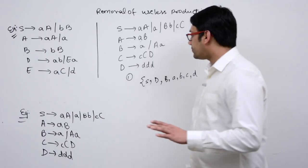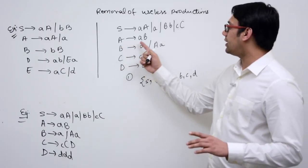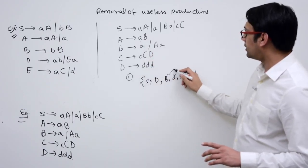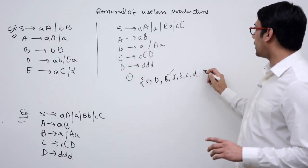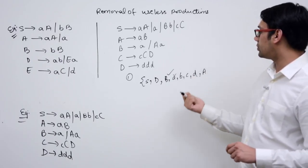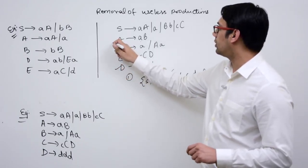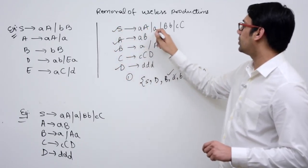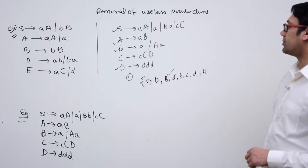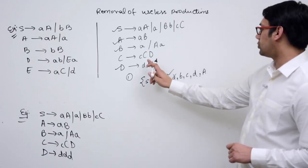Is there any right-hand side made up of only these useful symbols? A derives small a and b — both are useful — so capital A is also useful. D, B, A, and S are all proven to be useful because S is also directly generating small a.